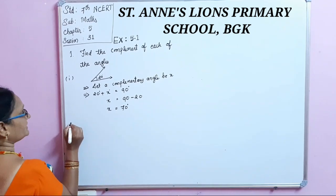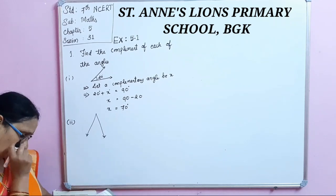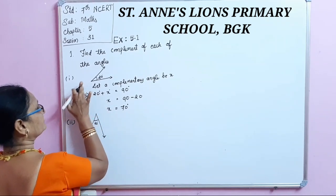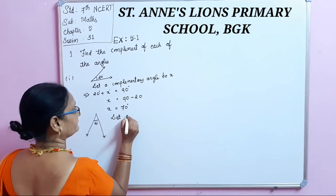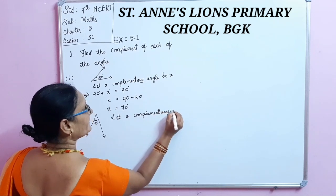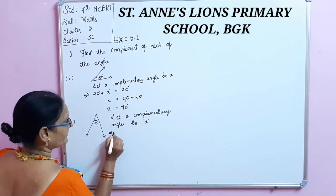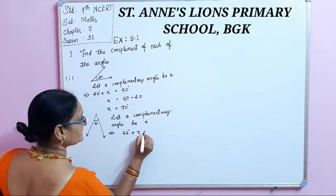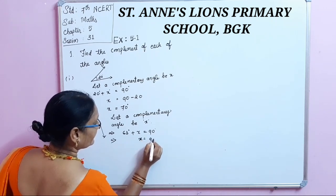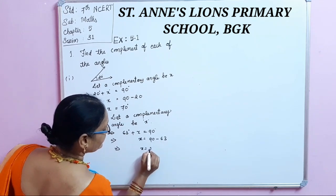The second angle is 63 degrees. Let the complementary angle be X. Then 63 degrees plus X equals 90 degrees. This implies X equals 90 minus 63, so X equals 27 degrees.